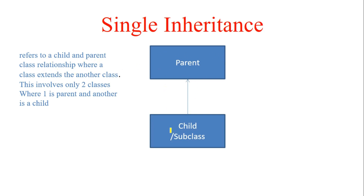Single inheritance refers to a child-parent relationship where one class extends another class. It involves only two classes — one parent and one child. For example, Animal is the parent class and Dog inherits from Animal, inheriting methods like two eyes and four legs. This is single inheritance: one parent, one subclass.